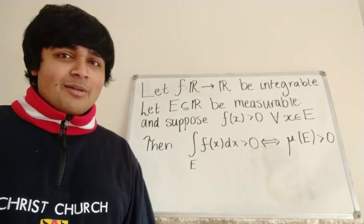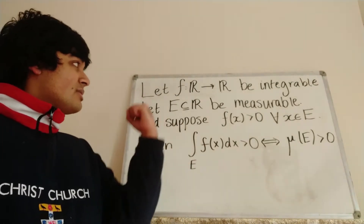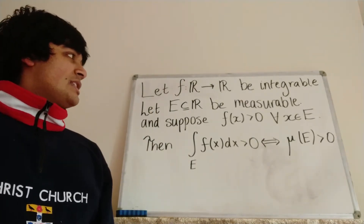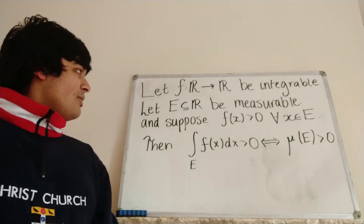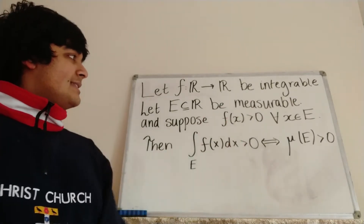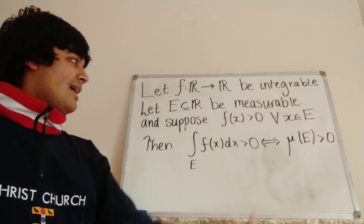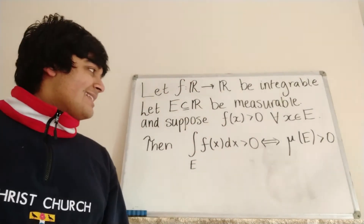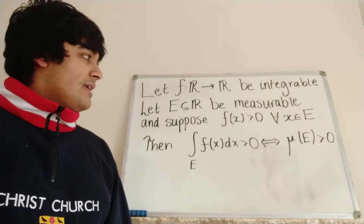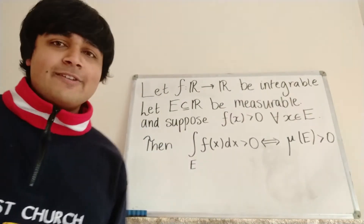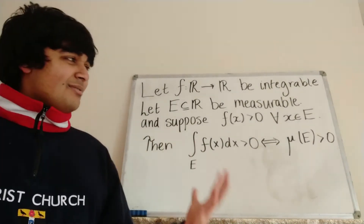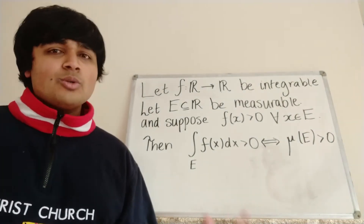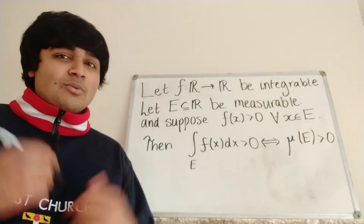Anyway, let me state the theorem I'm going to be proving today. We have a function from the reals to the reals which is Lebesgue integrable, and we have a subset E of the reals which is a Lebesgue measurable set, and we suppose that f(x) is bigger than zero for any x in the set E — so f restricted to E is strictly positive. Then I claim that the integral on E of f(x) dx is bigger than zero if and only if μ(E) is greater than zero, i.e. the measure of E is bigger than zero. Now this is kind of intuitive: if we have a function that's positive, we kind of expect its integral to be positive, but of course we've got to prove that rigorously and that's what I'm going to be doing in this video.